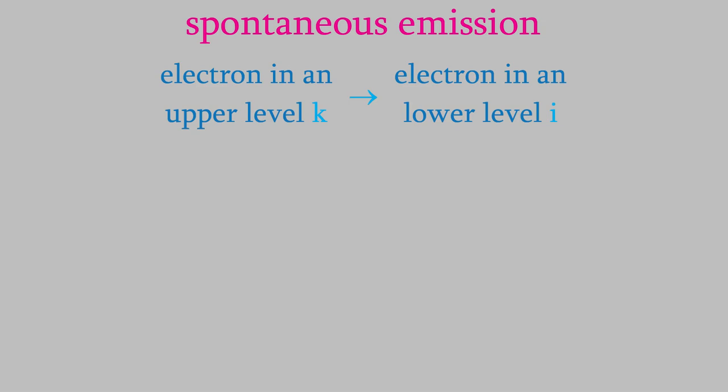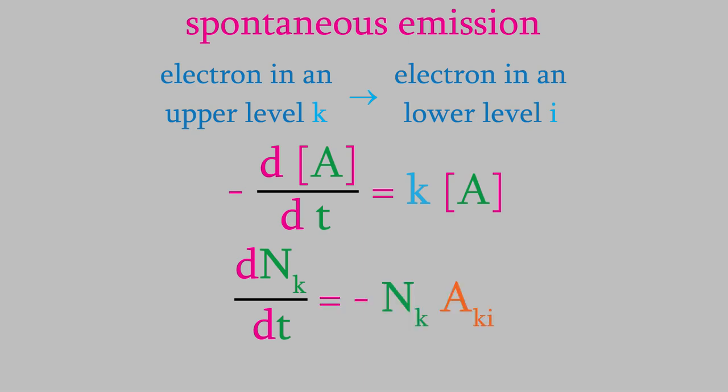As you might recall from PCHEM1, if we think about this as though it's a first order reaction, we can write a rate law for it. Our rate here is the change in the population of the upper level with time. So that'll be dNK over dt. On the right side of the equation, we'll have negative NK times a constant AKI.